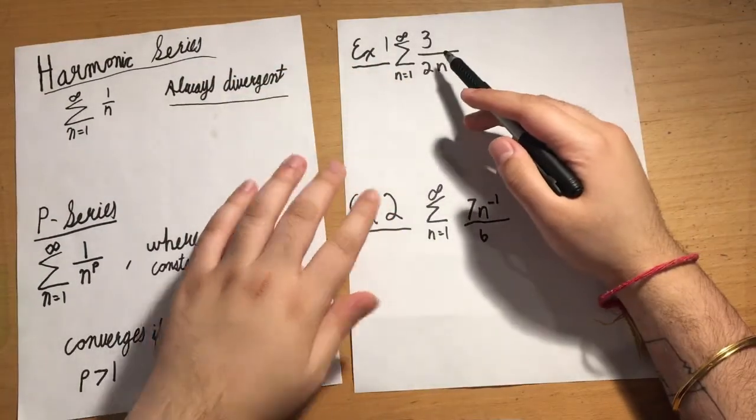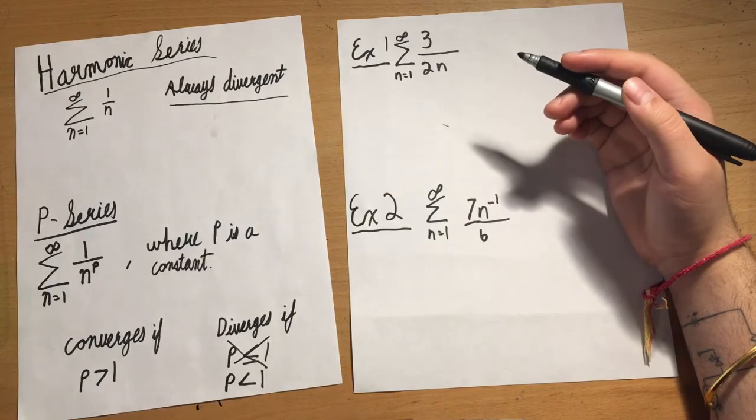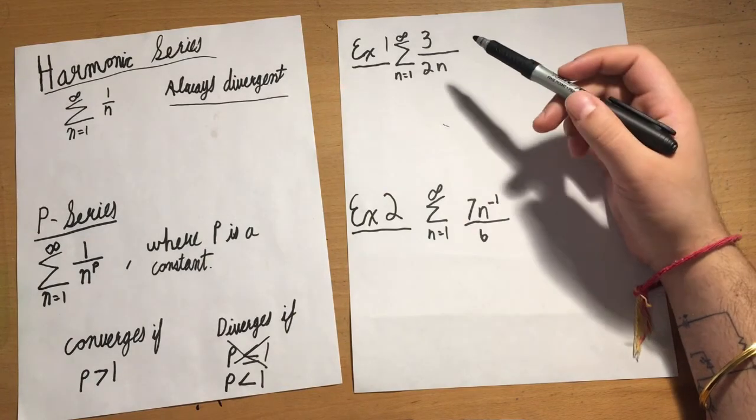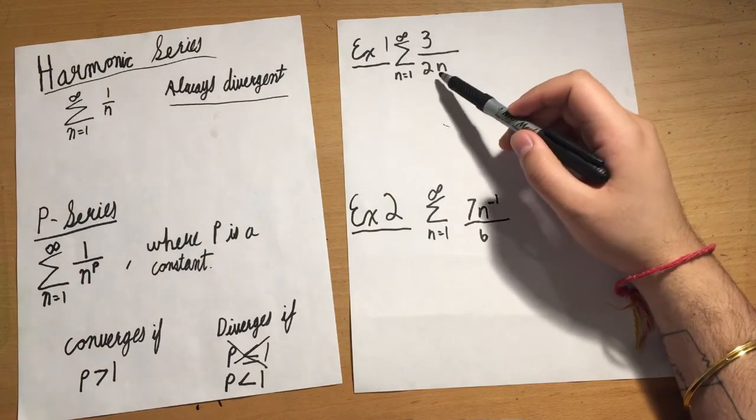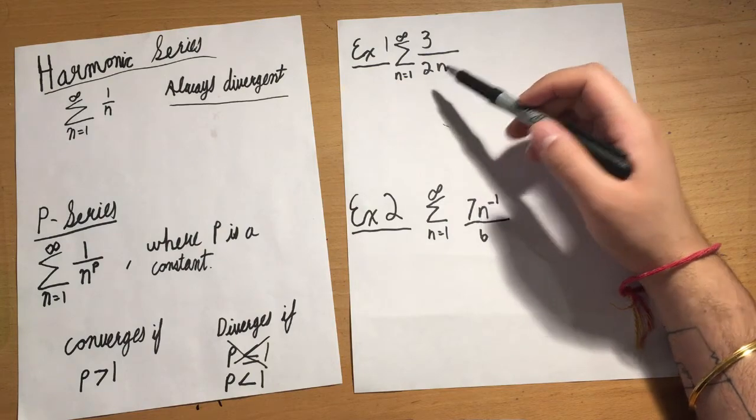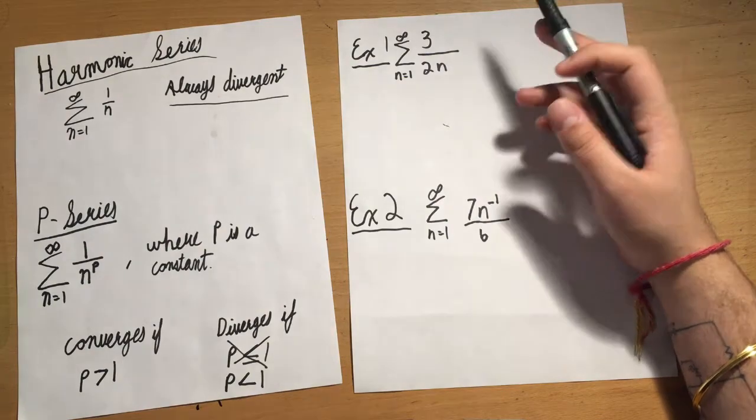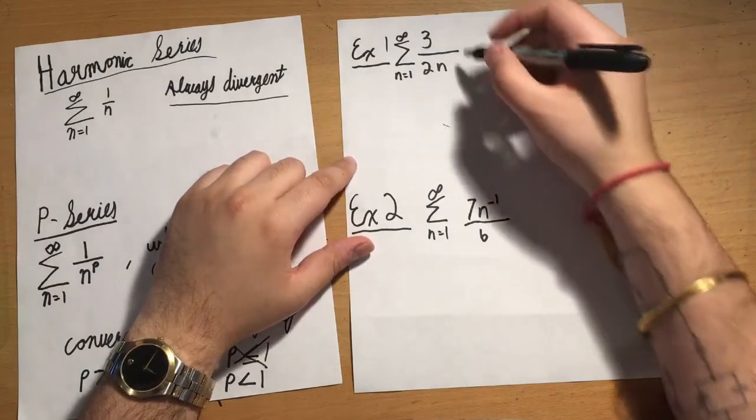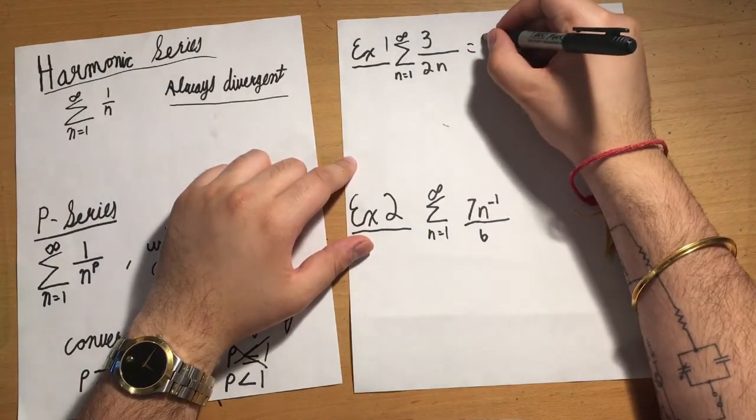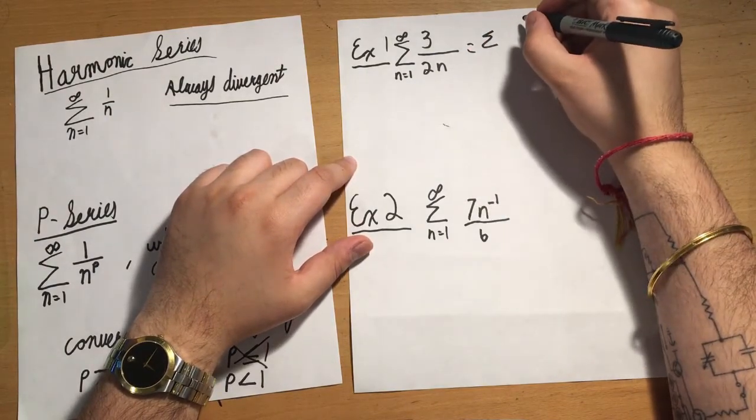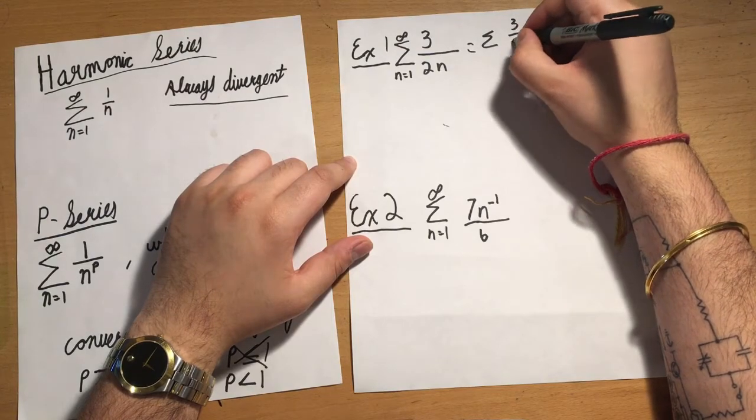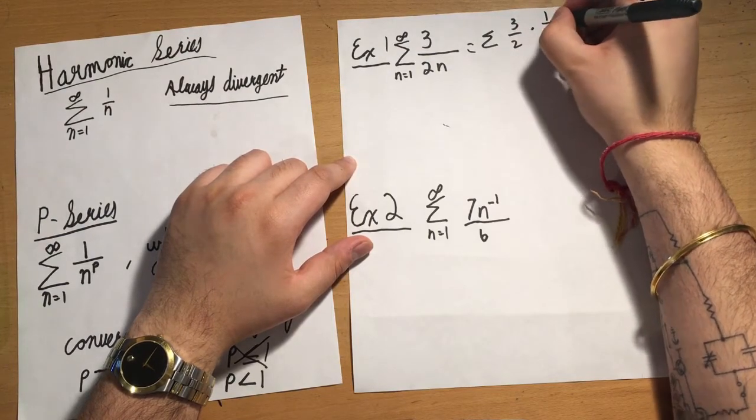Right now, this isn't in either one of the forms we want it in. However, I see simply the variable we're incrementing in the denominator. It looks like I can factor everything else out. So I can split this up into 3/2 times 1/n.